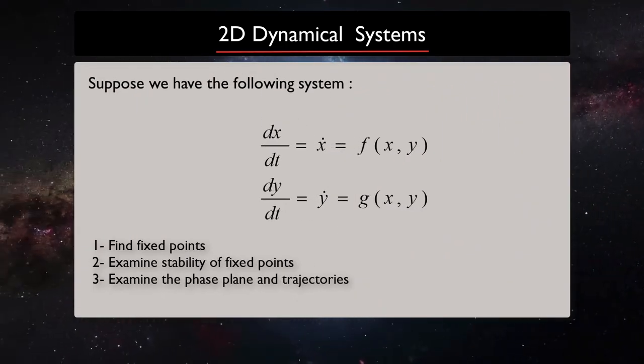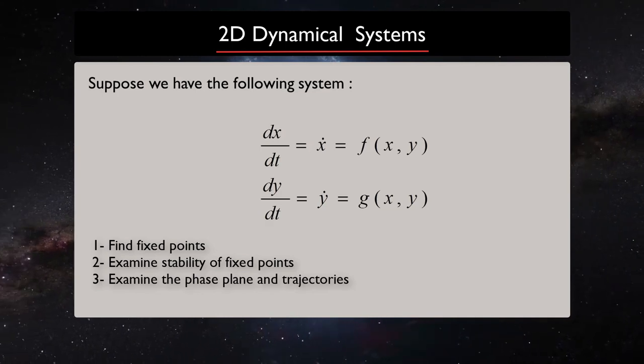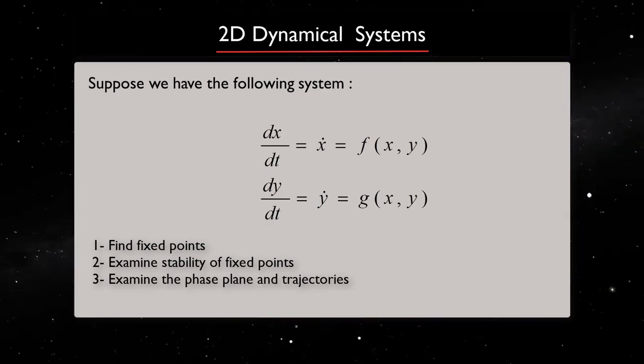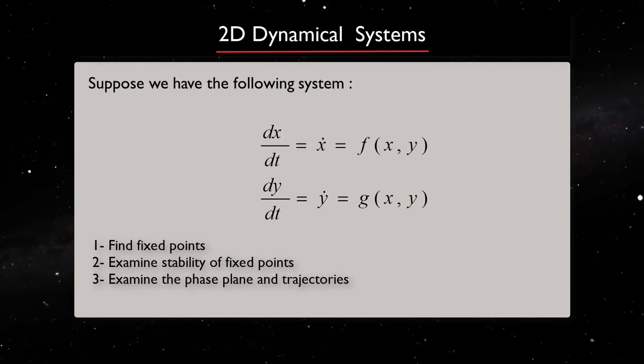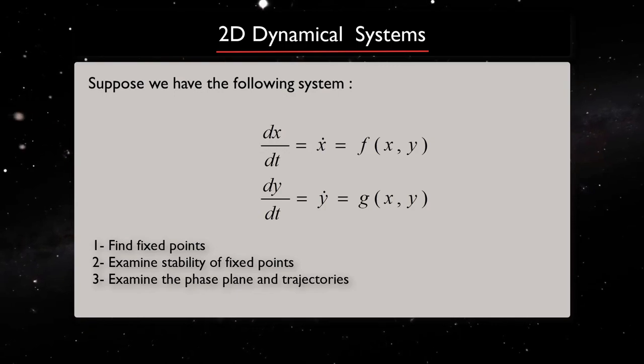Suppose we have the following system, two-dimensional, two-equations, two-variable. First we need to learn how we can find fixed points for this system and then we need to examine the stability of fixed points and finally we will examine the phase plane and trajectories of such systems.